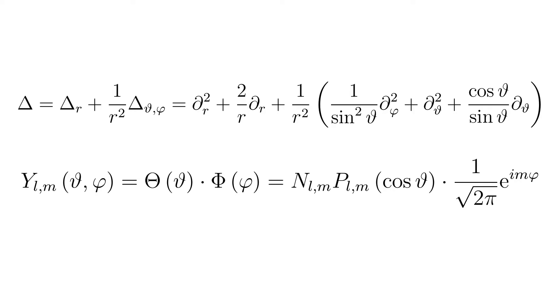Where plm are the Legendre polynomials and nlm are normalization factors, the eigenvalues are given by l times l plus 1. Delta theta phi times ylm equals minus l times l plus 1 times ylm.